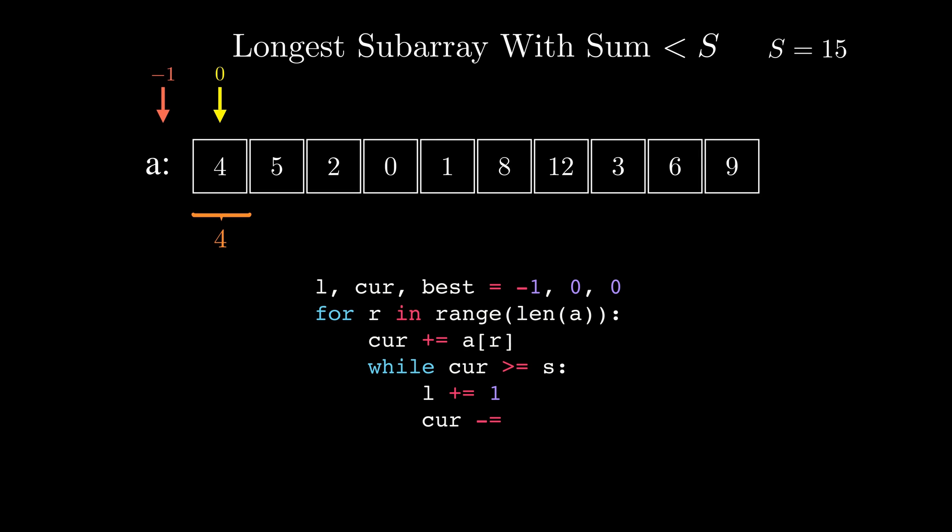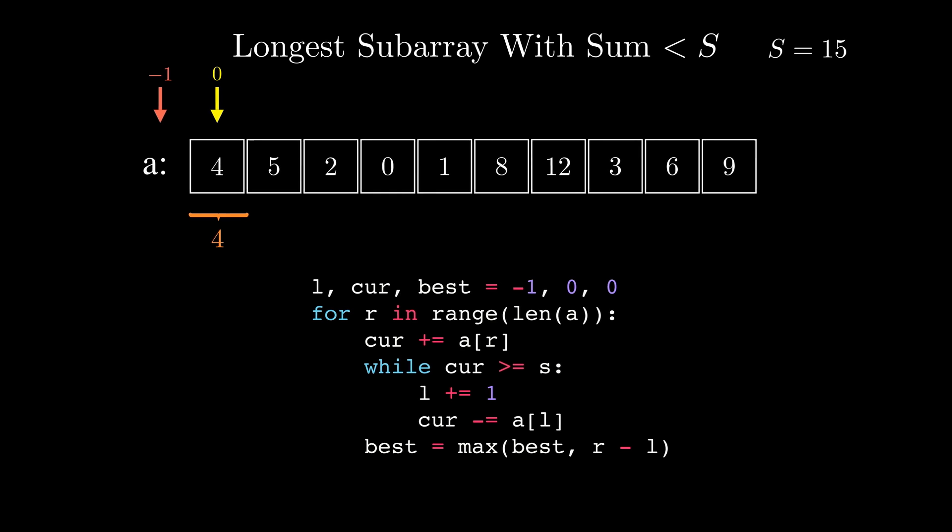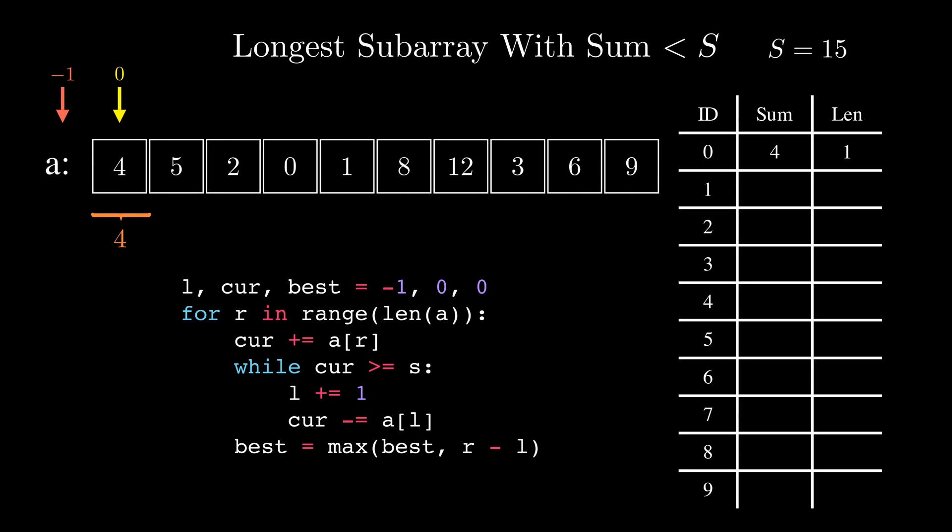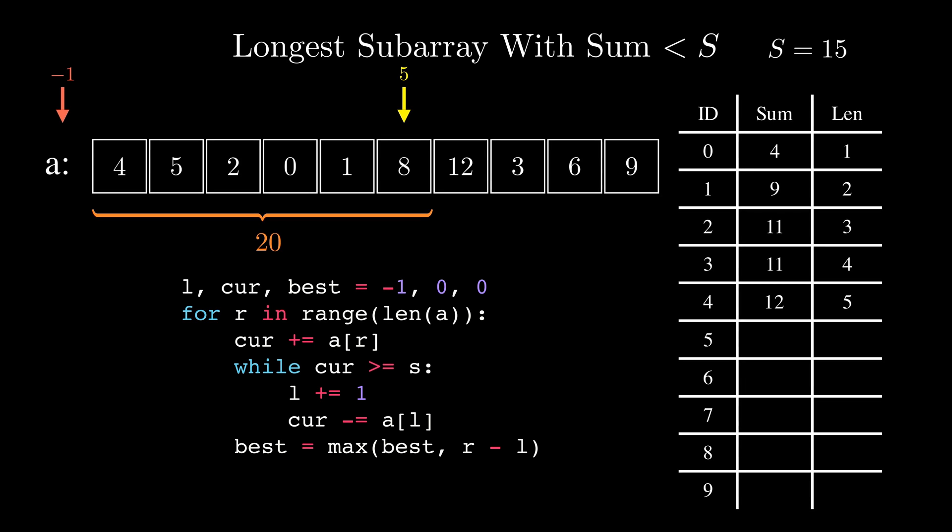After adjusting the left pointer we can update the current best answer as well. So for our example initially the current sum would be 4 then 9 then 11 then again 11 then 12 then 20 so we'll start adjusting the left pointer. The sum will turn 16 and then 11.